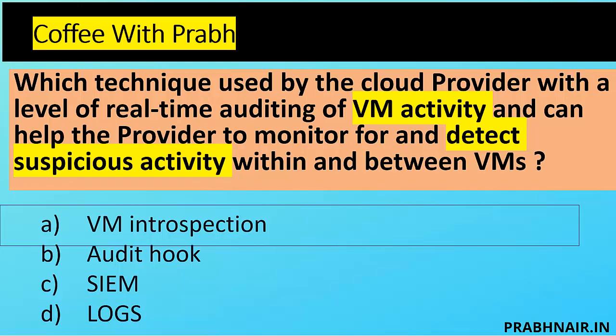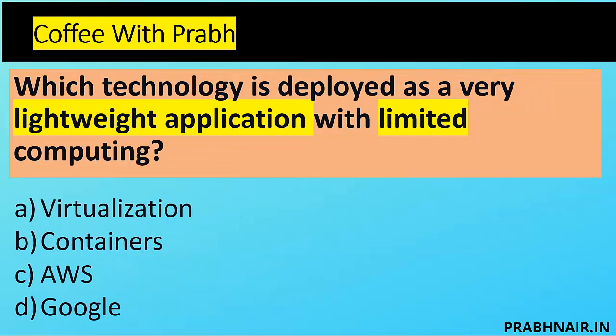Next coffee shot: which technology is deployed as a very lightweight application with limited computing? Keyword is lightweight and limited computing. Option A is virtualization, option B is container, option C is AWS, option D is Google. AWS and Google are not technologies — they are solutions — so C and D are removed. Virtualization is much heavier than containers, so today we basically use containers for most solutions. For those not familiar, let me give a brief history.